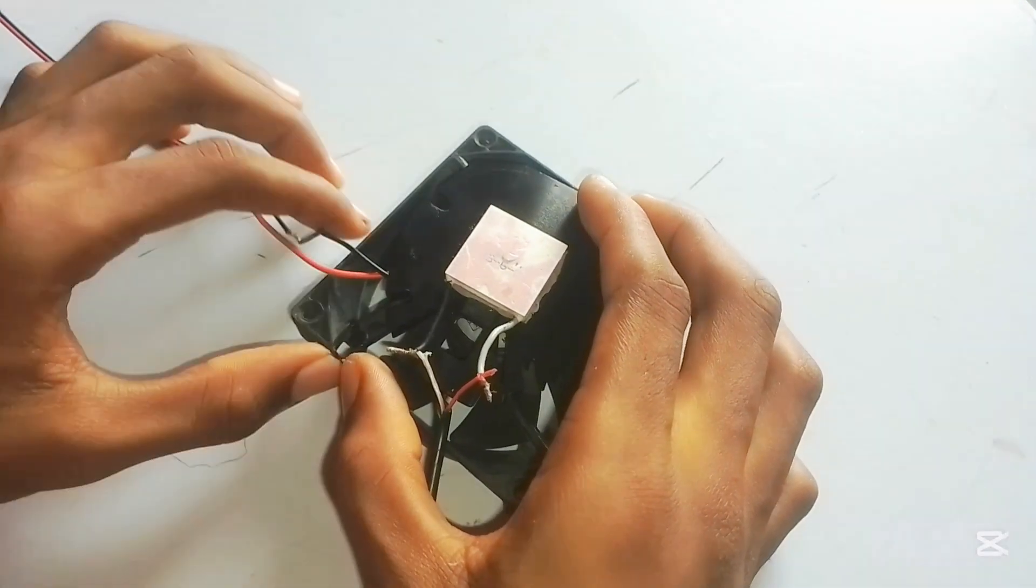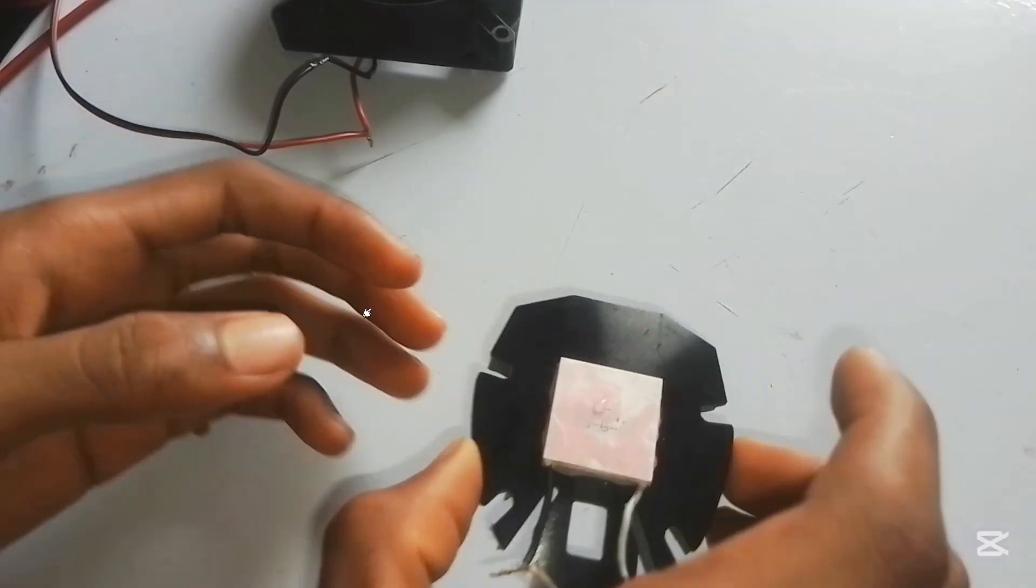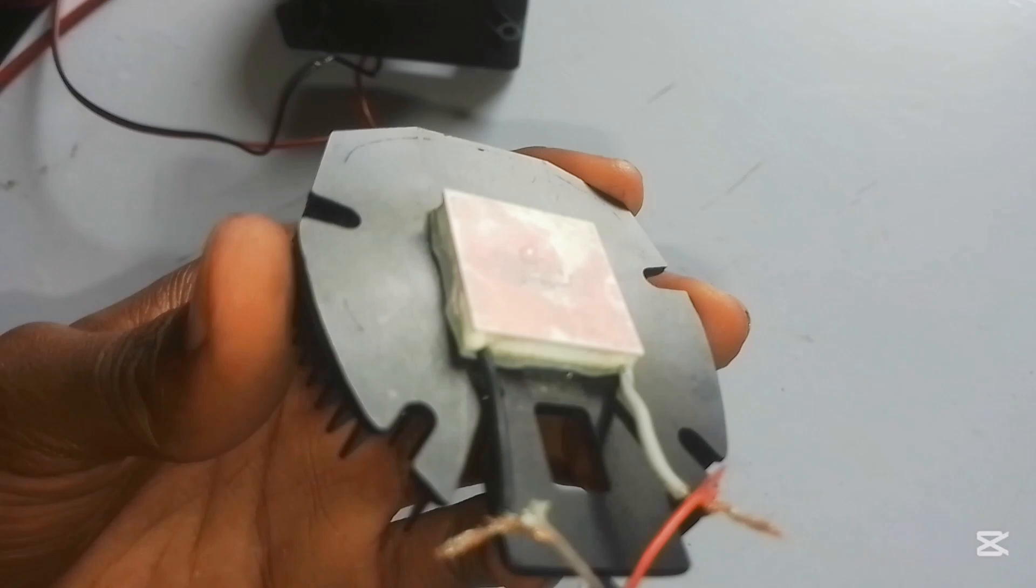Okay, right now we're going to be doing another test. We're going to put a droplet of water on the Peltier module cold side and we're going to leave it to run for a while and let's see if it actually freezes that droplet.